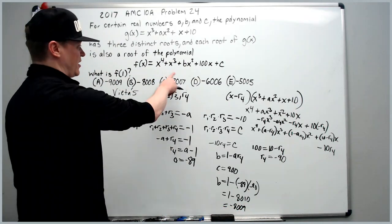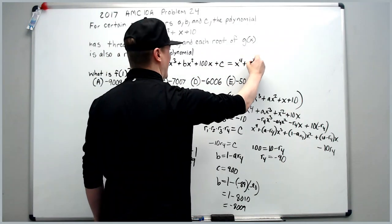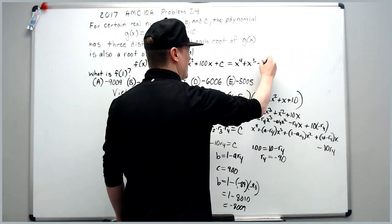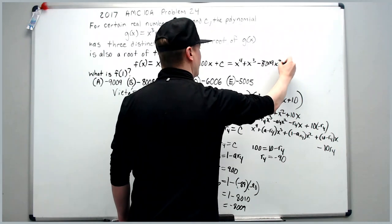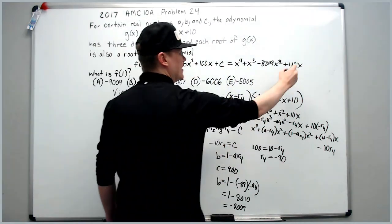Now we're just going to go plug into f of x. Everything we learned. It's x to the fourth plus x cubed. b is negative 8009x squared plus 100x plus c and c is 900.